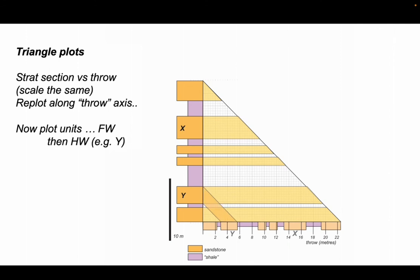For example, here I've joined up sandstone Y with its position on the vertical and throw axis. This shows the position of the hanging wall as we increase the throw on the fault from zero on the left down towards six meters on the right. Any further throw on this fault would move Y out of our area of interest.